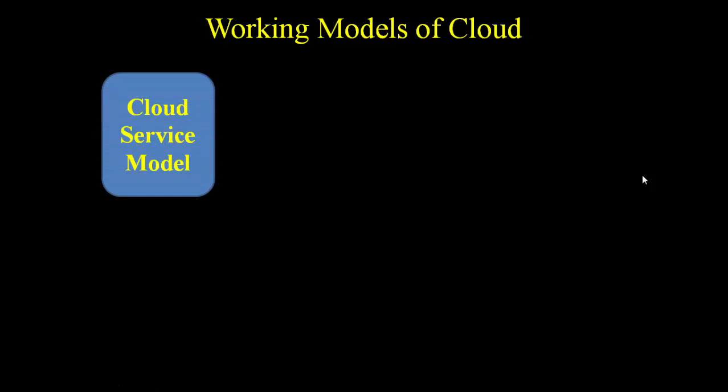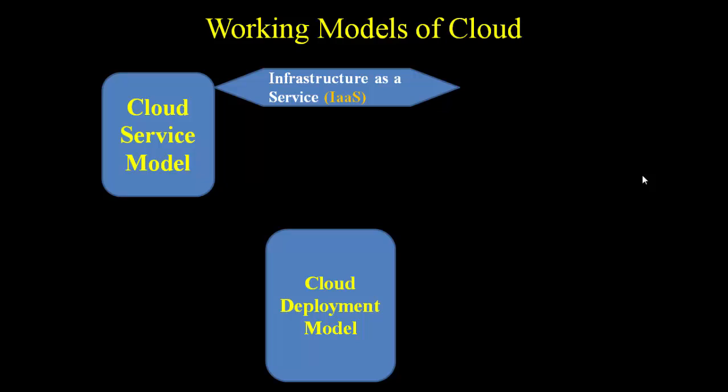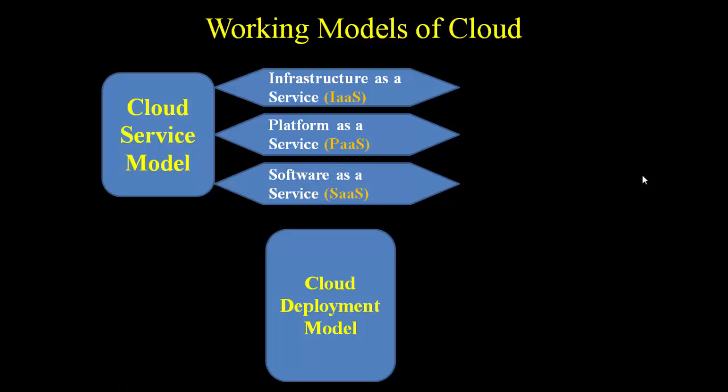In the working model of the cloud, there are basically two kinds of models: one is the cloud service model and the second is the cloud deployment model. In the cloud service model we will discuss infrastructure as a service, also known as IaaS, then platform as a service, also known as PaaS, and software as a service, known as SaaS.